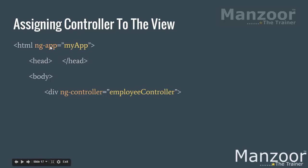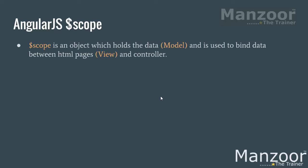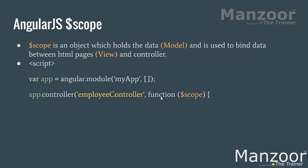In the view, I have `ng-app` with the module on the HTML tag, and inside the body I have a `div` with `ng-controller` mapped to `EmployeeController`. `$scope` is an object that stores the model so I can render it on the view. You can simulate this with ViewBag or ViewData in ASP.NET MVC — we store values in the controller and access them on cshtml pages. Similarly, we store values in the `$scope` object. `$scope` is an object which holds the data and is used to bind data between the HTML page and the controller.